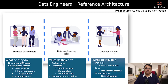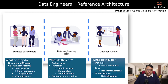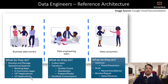How do we separate them into three groups? It is purely based on what they do. Business data owners develop and manage operational systems for the organization — for example, banking applications, e-commerce applications, OTT applications, IoT applications. These are the applications with which end consumers or customers interact on a day-to-day basis, operationalizing the organization's daily business.